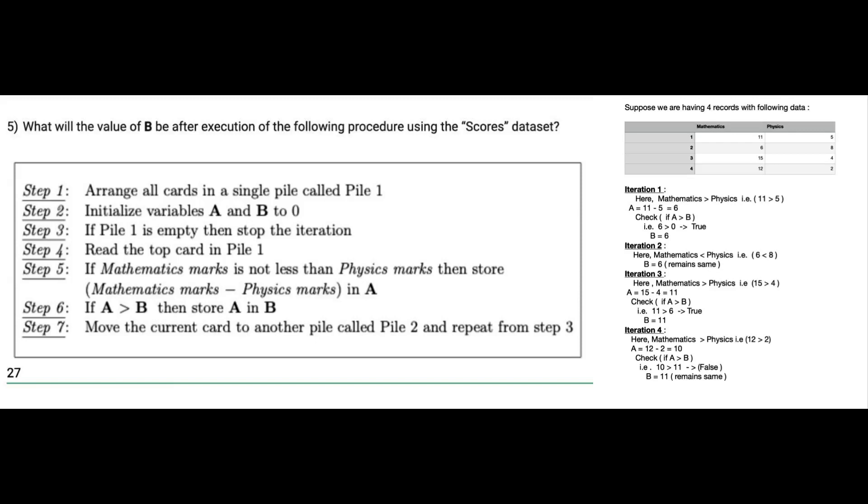Now in the second iteration, we will check the record of student 2. Here 6 is less than 8, which means that mathematics marks is less than physics marks, so the condition comes out to be false. So we will not check the other condition and the value of B will remain the same, that is 6.